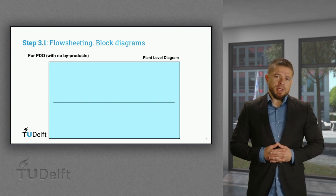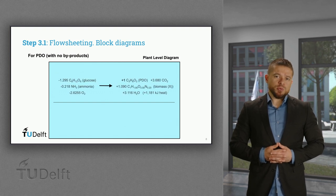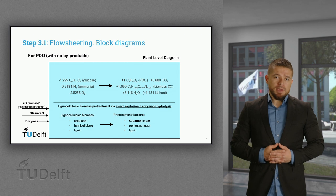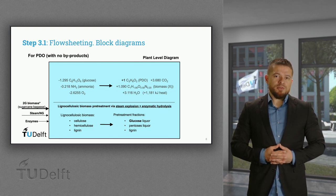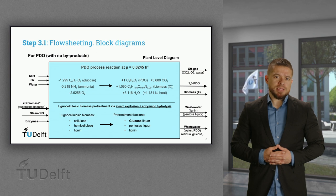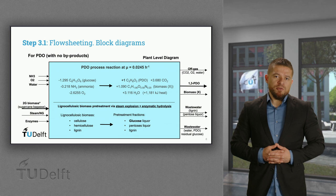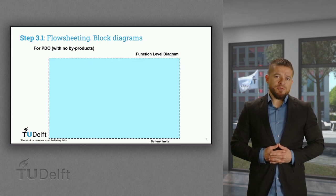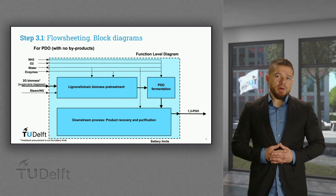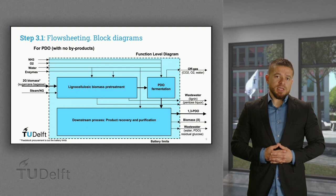Let's take a look at the PDO case. The fermentation stoichiometry is known from week 2. Assuming that sugarcane bagasse is the feedstock instead of glucose, a pretreatment step is needed, which could be steam explosion followed by enzymatic hydrolysis. With glucose available, the fermentation process can take place, and the expected outflows are PDO as the main product, biomass and carbon dioxide from the aerobic fermentation, and wastewater streams from the pretreatment and downstream process. At the function level, we have first a pretreatment process for biomass, followed by the fermentation step, and finally the downstream process where pure PDO is obtained. For each section, the additional raw materials and utilities can be allocated, and from the stoichiometries of pretreatment and fermentation, we can also allocate the different outflow streams.